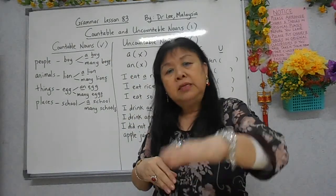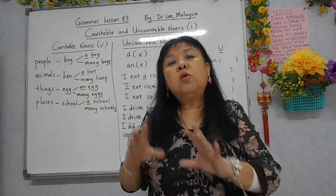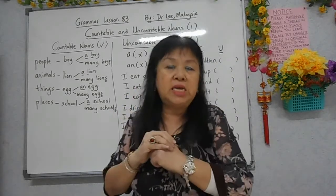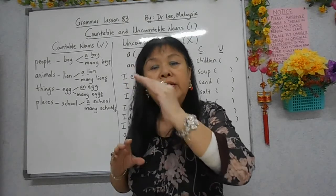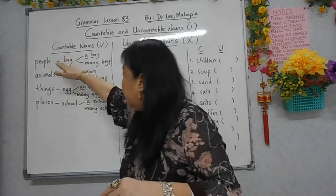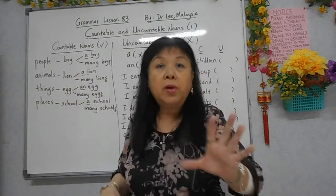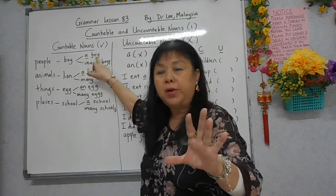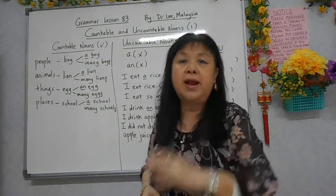Kalau dia countable nouns dan dia bermaksud satu, kita mesti gunakan 'a' untuk perkataan yang bermula dengan consonants. Consonants maksudnya bukan a, e, i, o, u. Kalau ia adalah vowel — a, e, i, o, u — kalau perkataan itu bermula dengan a, e, i, o, u, maka kita gunakan 'an' untuk menunjukkan satu. Di sini, people, animals, things, and places. Contoh, boy. Kalau boy bermaksud seorang lelaki, maka saya mesti gunakan 'a' untuk menunjukkan seorang boy. Kalau banyak lelaki, many boys. Jadi, kamu belajar 'many' — boleh kira, dan maksudnya banyak. 'A' sebab bermula dengan L, bukan a, e, i, o, u. Many lions — kalau 'many', maksudnya banyak boleh kira.